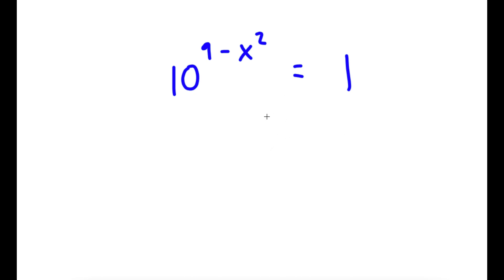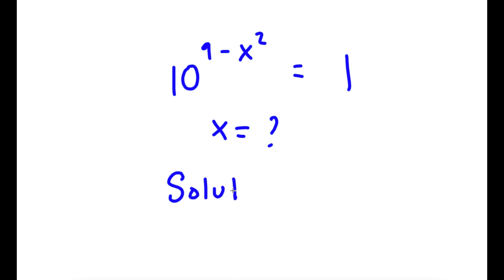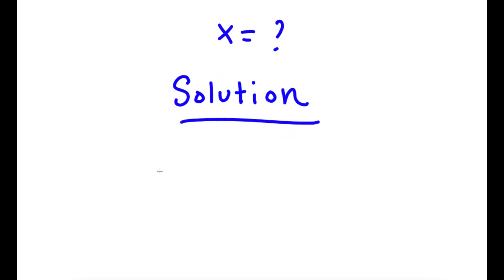In this problem, I have 10 to the power of 9 minus x squared is equal to 1. I want to find the value of x. So for my solution, I first start with 10 to the power of 9 minus x squared is equal to 1.